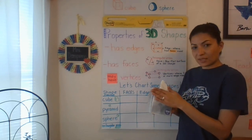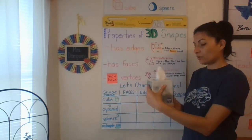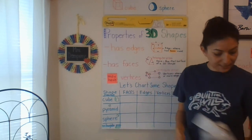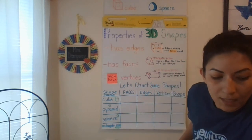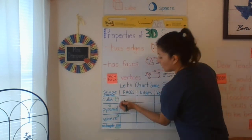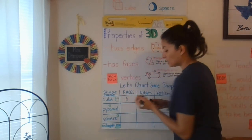So if you're looking at the cube, I see there is 1, 2, 3, 4, 5, 6. So I'm going to use my marker and I'm going to write a cube has 6 faces.